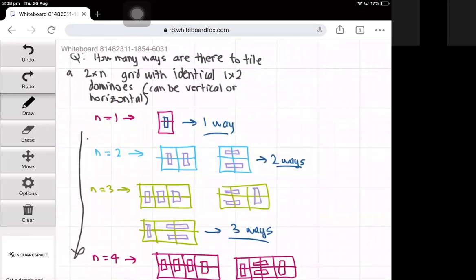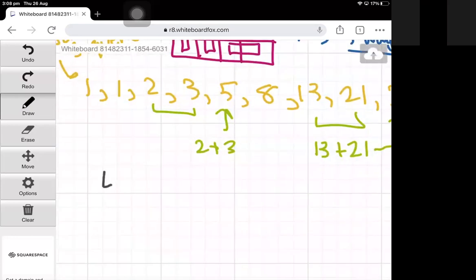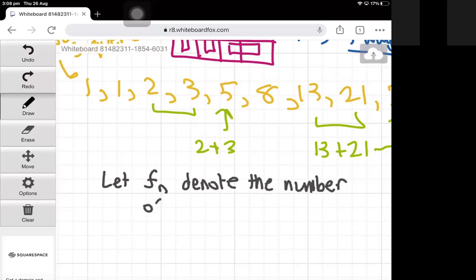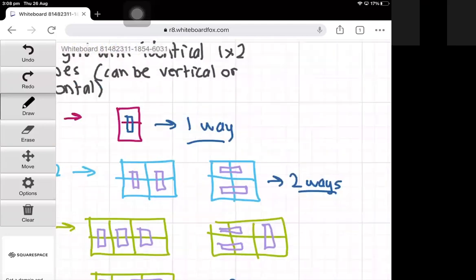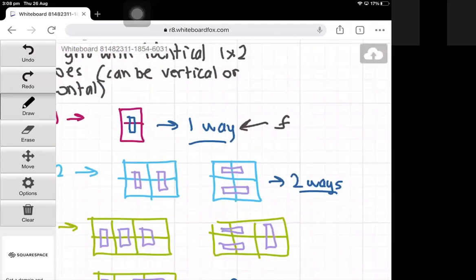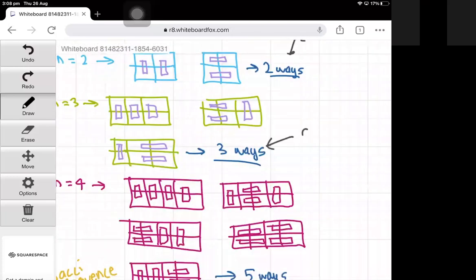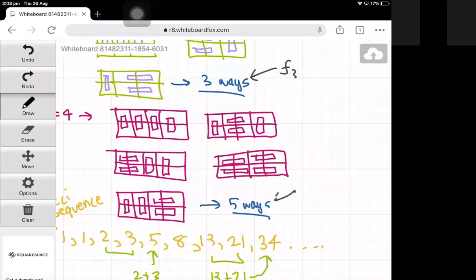What we can first do is let Fn denote the number of tilings for a 2×n board. So we'll just label the number of ways of doing it for n as F of n. So we have F of 1 equals 1, F of 2 equals 2, F of 3 equals 3, and F of 4 equals 5.